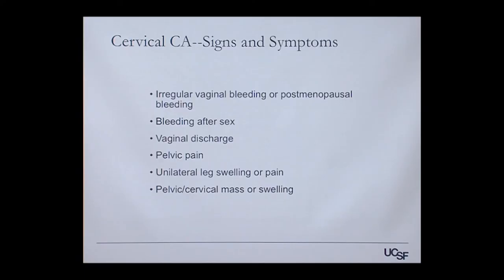Another angle toward prevention is recognizing signs and symptoms early and seeking medical care. There are definite signs and symptoms of cervical cancer: irregular vaginal bleeding, bleeding after menopause, bleeding after sex, vaginal discharge, pelvic pain, unilateral leg swelling or pain — a sign of advanced cervical cancer that has extended to the pelvic sidewall nerves — and a visible mass or swelling.